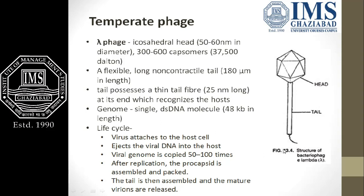The virus attaches to the host cell, then ejects the viral DNA into the host. The viral genome is copied around 50 to 100 times. After replication, a procapsid is assembled and packed, then the tail is assembled, and mature virions are released.